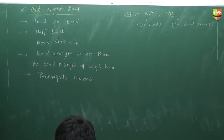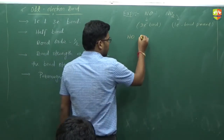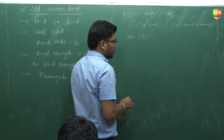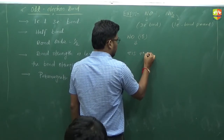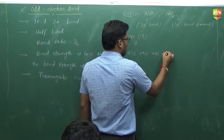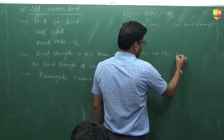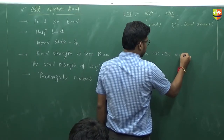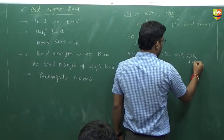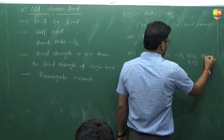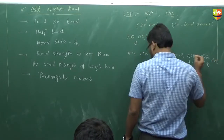Let's look at NO. How many electrons does it have? 15 electrons total. If you draw the MO configuration, it goes: σ1s, σ*1s, σ2s, σ*2s, σ2pz, π2px, π2py, π*2px, π*2py, and σ*2pz.